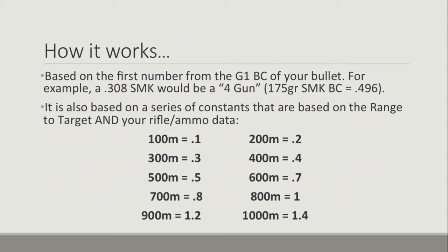It's also based on a series of constants that are based on the range to target and your rifle/ammo data — whatever your range card or range tables tell you. At 100 meters it becomes 0.1, 200 meters 0.2, 300 meters 0.3, and so on until you get to 600 meters where it becomes 0.7. At 700 meters it becomes 0.8, 800 meters it becomes 1, 900 meters 1.2, and 1000 meters 1.4.